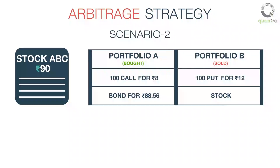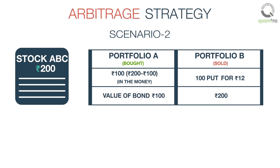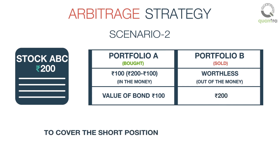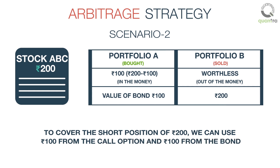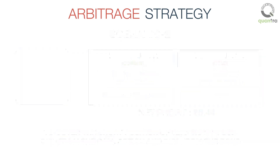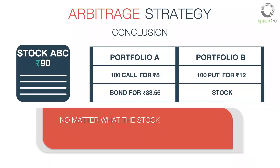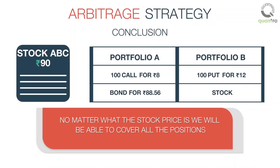In scenario 2, assume that the stock price reaches Rs.200 at expiration. The call option is in the money, which is worth Rs.100, and we have a bond which is also worth Rs.100. The put option expires worthless. But we had sold the stock in portfolio B, which now costs us Rs.200. So to cover the short position of Rs.200, we can use Rs.100 from the call option and Rs.100 from the bond, so that our profit still remains the same at Rs.5.44. The conclusion is that no matter what the stock price is, we will be able to cover all the positions and make a profit of Rs.5.44.